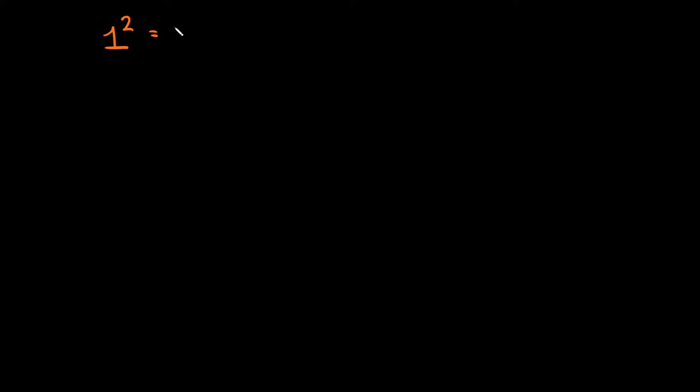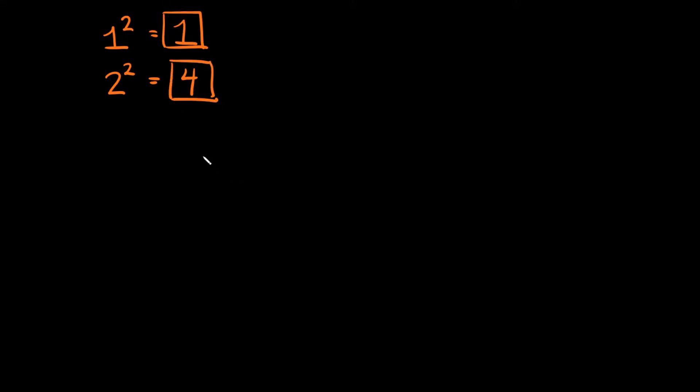For example, let's take the number one — that's a whole number — and let's square it. One squared is just equal to one, so that means one is a perfect square. Let's take two and square that. You get four, so that means four is a perfect square.